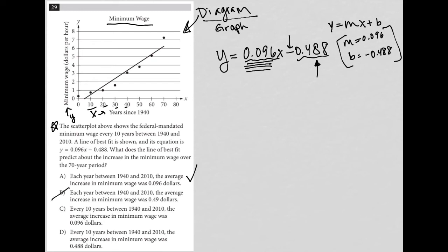Choice C, every 10 years between 1940 and 2010, the average increase in minimum wage was $0.096. So every 10 years, no. Because again, our slope is a per year unit. So C, although it sounds a lot like A, is not correct. We want each year. That's what the slope is telling us, not every 10 years.